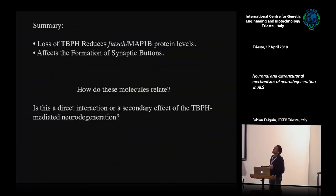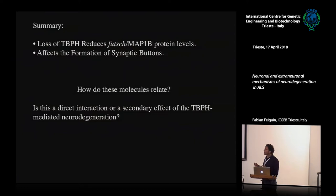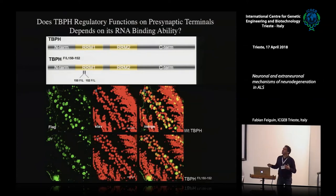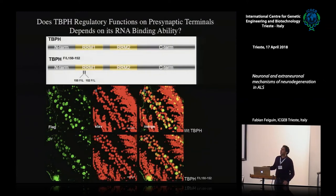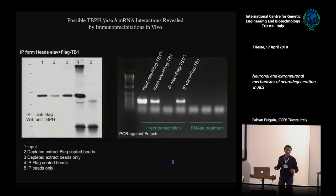The conclusion is that loss of TBPH reduces MAP1B protein levels, and this affects the formation of synaptic boutons. But the question is: how does a nuclear protein regulate a protein that has a role in synaptic boutons? To answer this, we performed pulldown experiments using a TBPH protein unable to bind RNA as a control — one that binds and one that doesn't — to test whether TBPH could interact with the MAP1B messenger RNA.